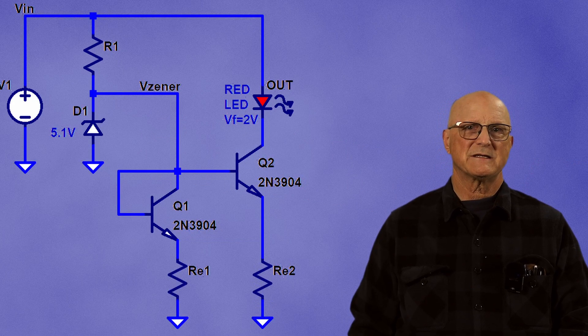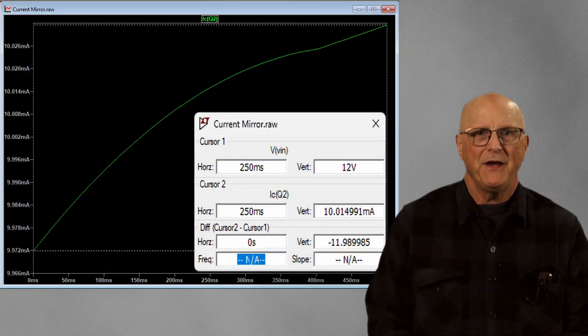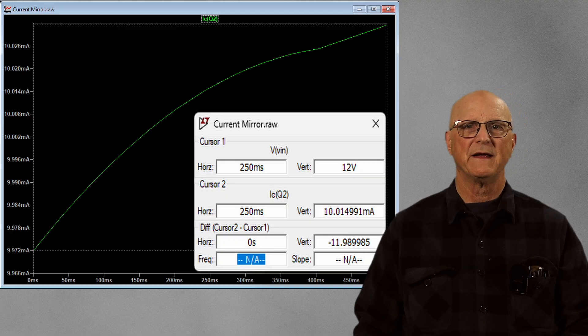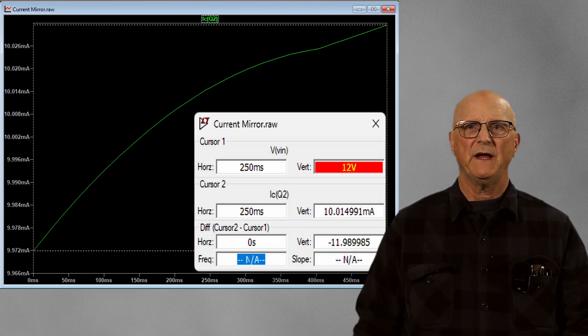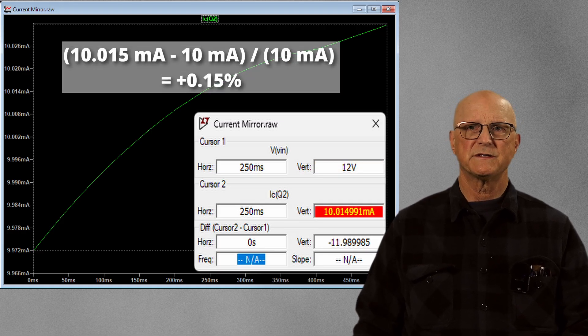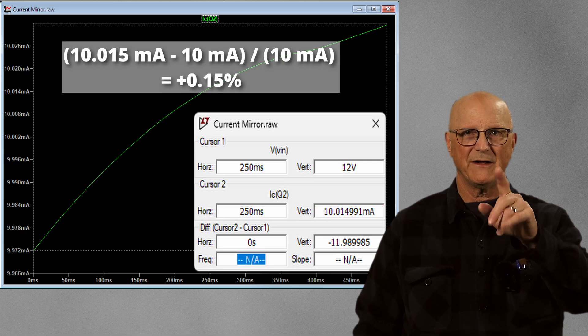So how does this simulate out? Well, let's take a look. And here are the simulation results for our current mirror. At a nominal input voltage of 12 volts, we have a Q2 collector current of 10.015 milliamps. This is 0.15% high of our target. I'll take that.